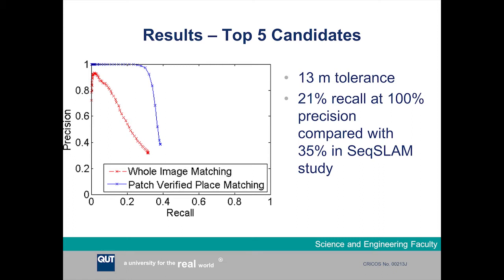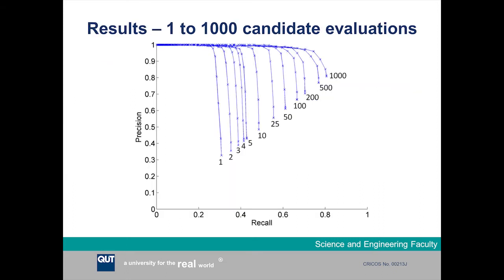This graph shows the precision-recall performance when we did a parameter sweep, evaluating anywhere from one to a thousand of the top-ranked place match candidates from stage one of the three-stage place recognition system. You can see that as you evaluate a larger number of candidates, you get better precision-recall performance. When evaluating 500 or more candidates, we were able to hit 51% recall at 100% precision, beating the original Sequence Slam result.